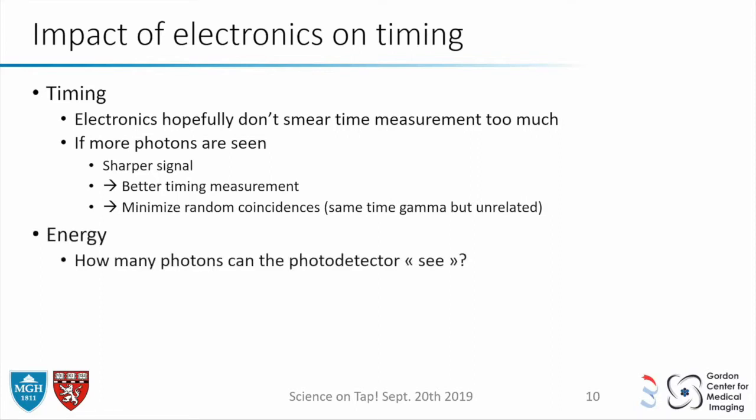For energy, there are Compton events — partial interactions in your crystal. With electronics, you don't necessarily see all the photons, only part of them. The more photons you see, the better the energy resolution, and then the better you can discard the less interesting data and keep only what you really want.